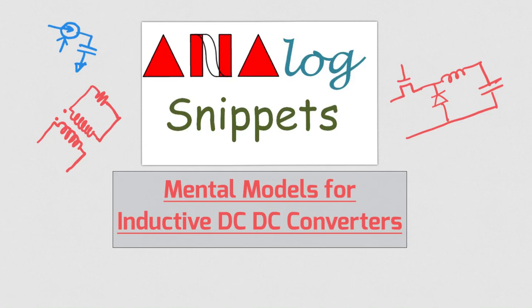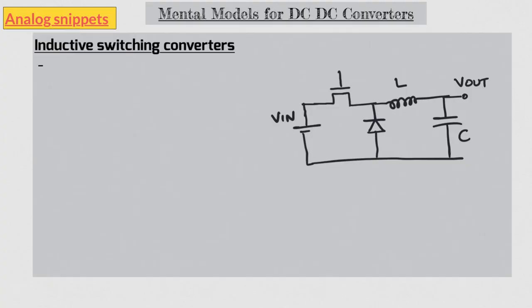Hello everyone, welcome back to analog snippets. If you are looking at a simplified DC to DC converter circuit for the first time, you might think I know this circuit, this is an LC tank, this might be some sort of oscillator, and that would be obviously wrong.